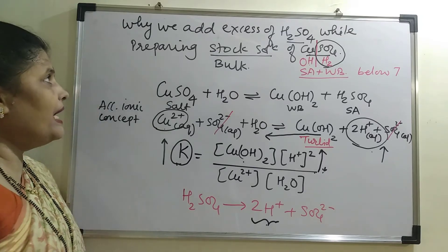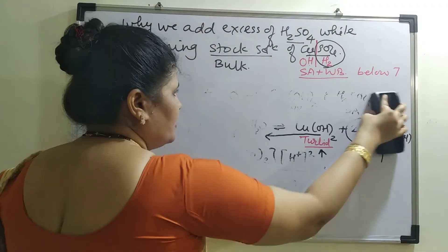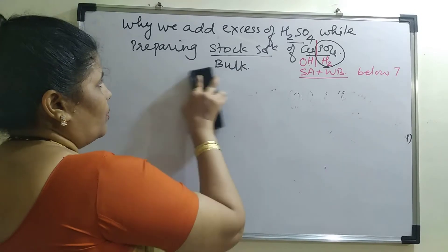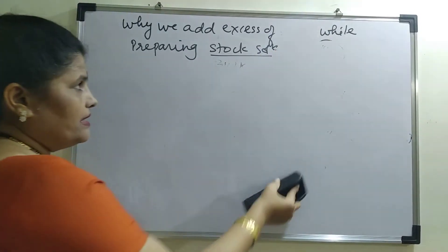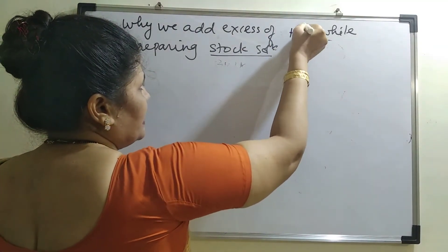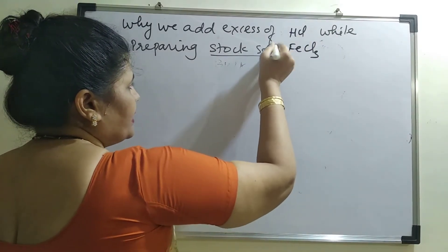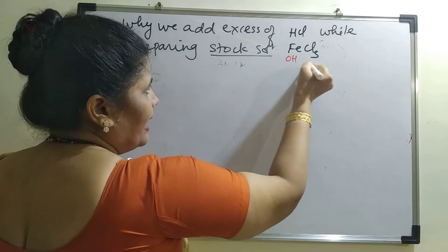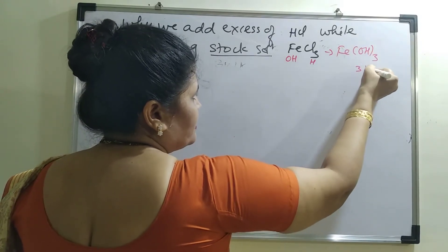The same question can be asked: why do we add excess HCl solution while preparing the stock solution of FeCl₃, that is ferric chloride? The reasoning is the same. FeCl₃ — if we split this salt by adding OH to one side and H to the other, we get Fe(OH)₃ and HCl.